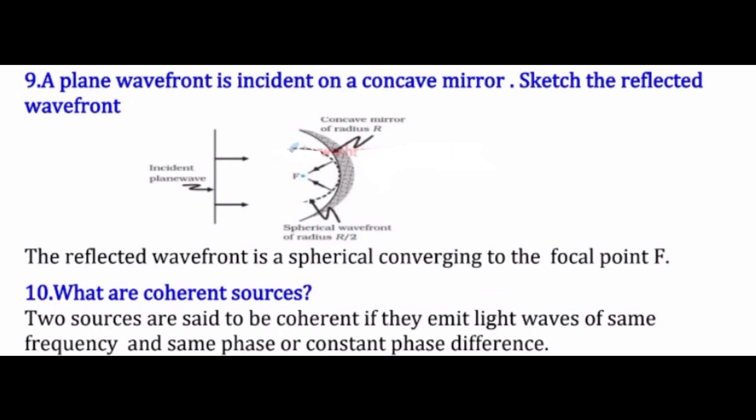The next question is: a plane wavefront is incident on a concave mirror — sketch the reflected wavefront. Here we have a concave mirror and a plane wavefront passing through it. The reflected wavefront will be spherical and converging to the focal point F — that is also a spherical wavefront.